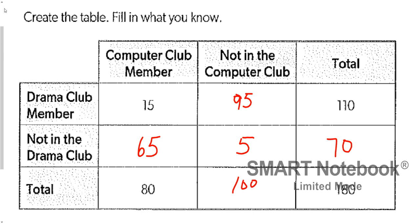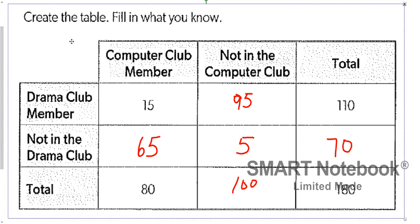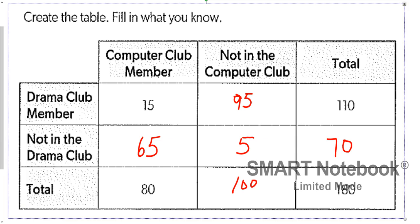That's two-way tables. The main things are: make sure you can read them correctly, find the totals, find the relative frequencies, and convert your numbers. Reach out to your teachers if you have questions, or look up videos on YouTube or Google. Do something to help yourself so that when you get to high school math, it's a little easier.